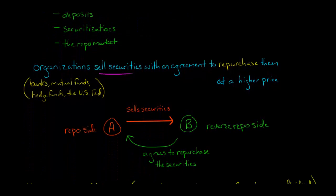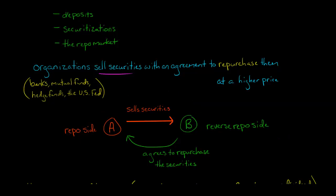The repo side in the repo market is the side that is selling the securities. So the repo side — let's say a bank — is going to sell securities to another party. The party that is buying those securities is called the reverse repo side. When the repo side sells the securities to the reverse repo side, there is an agreement that the reverse repo side will sell those securities back.